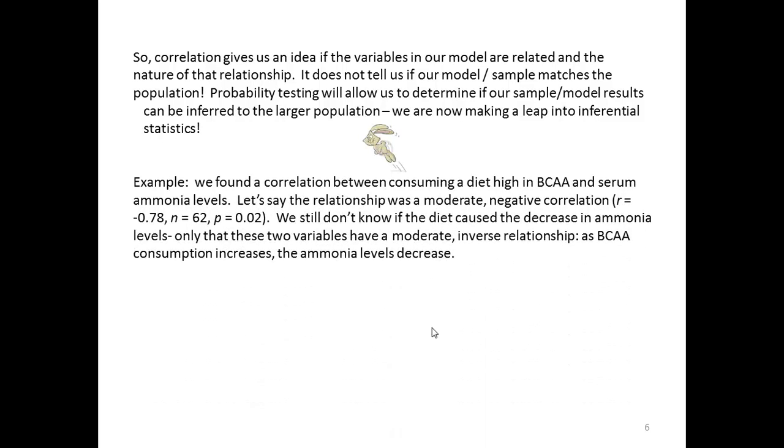Here's another example. We found a correlation between consuming a diet in branched-chain amino acids and serum ammonia levels. Let's say the relationship was a moderate-negative correlation. We still don't know if the diet, high in branched-chain amino acids, caused a decrease in the ammonia levels. We only know these two variables have a moderate-inverse relationship. As branched-chain amino acid consumption increases, the ammonia levels go down.